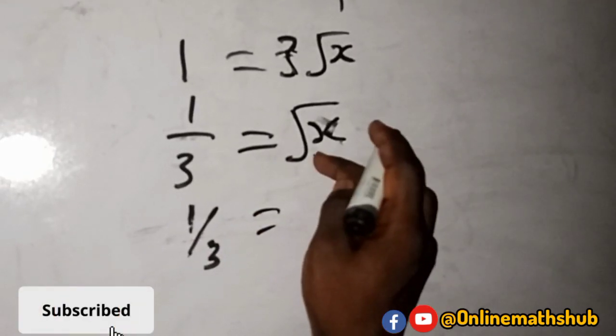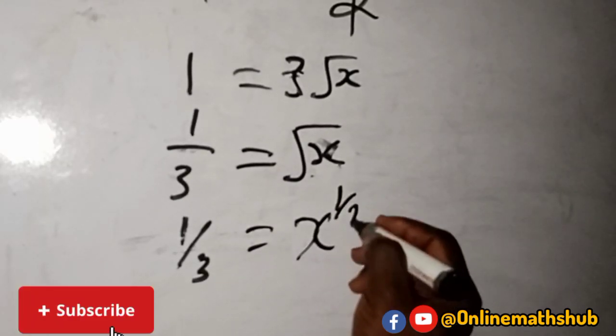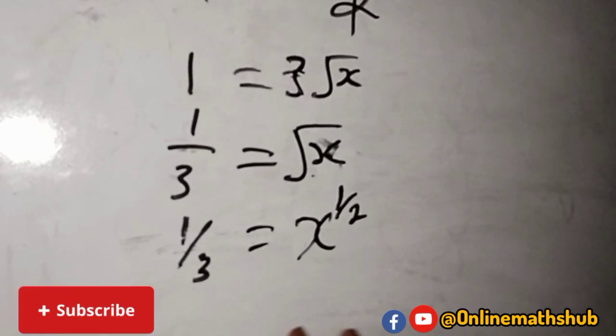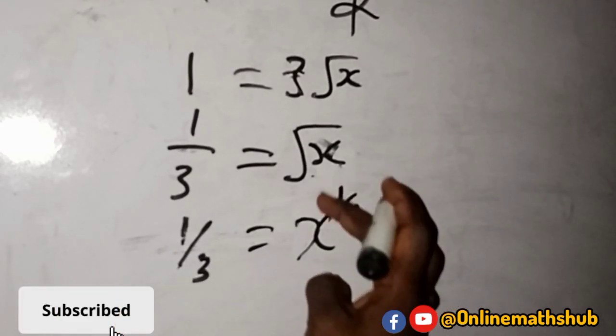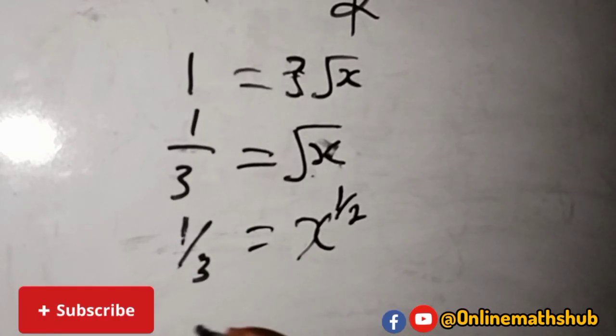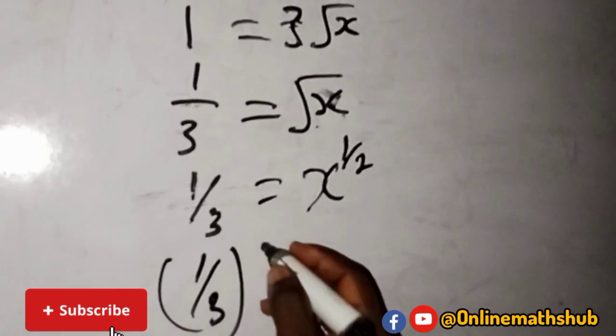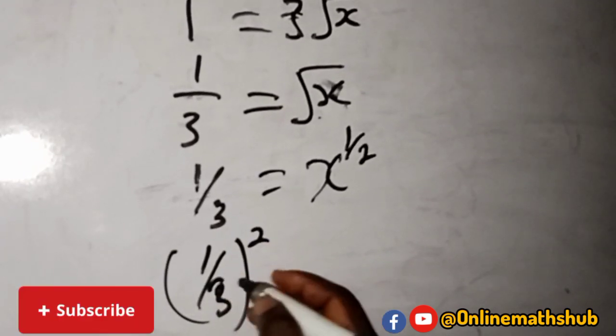equal to root x, which I can write as x raised to power 1 over 2. What I want to do to take care of this is to take the square of both sides. So this is 1 over 3 squared